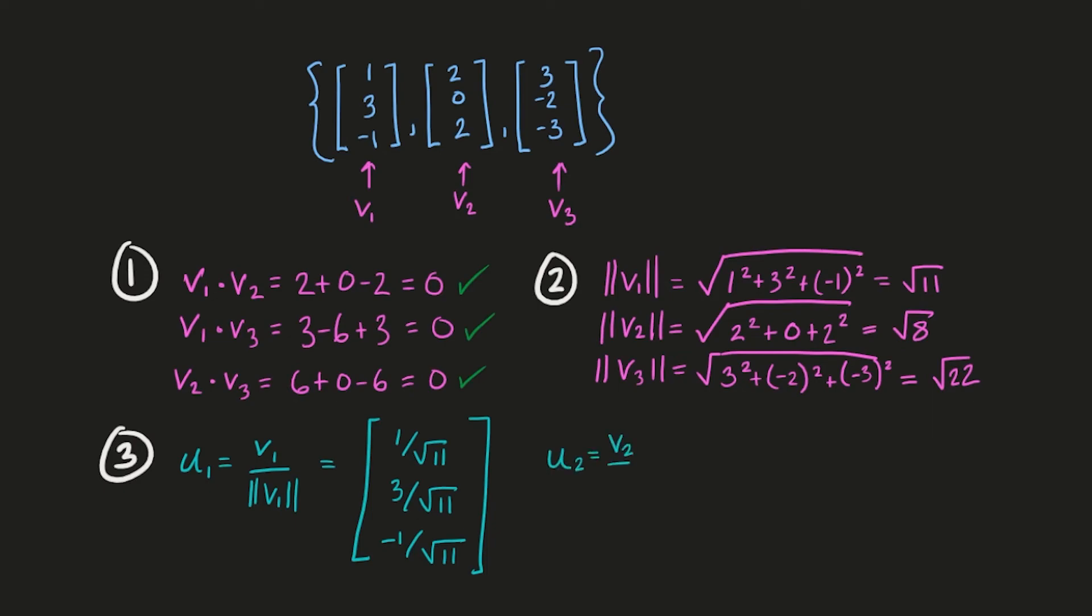For u2, again, we're just taking the original components of v2 and putting it over our found length of v2. So that's 2 over root 8, 0, and 2 over root 8.